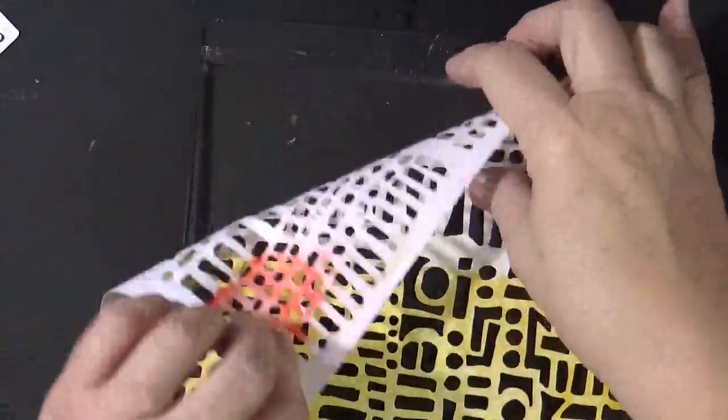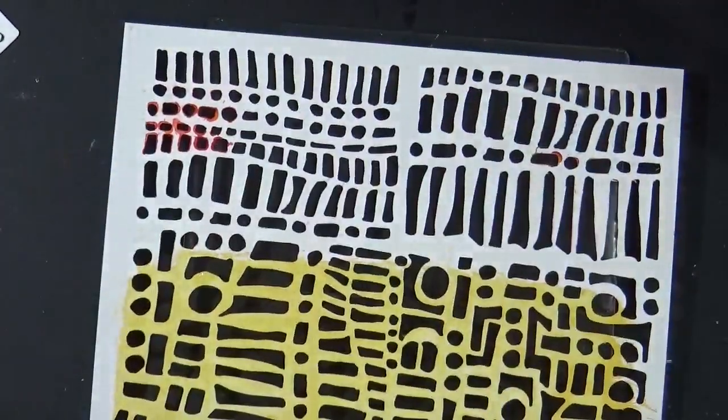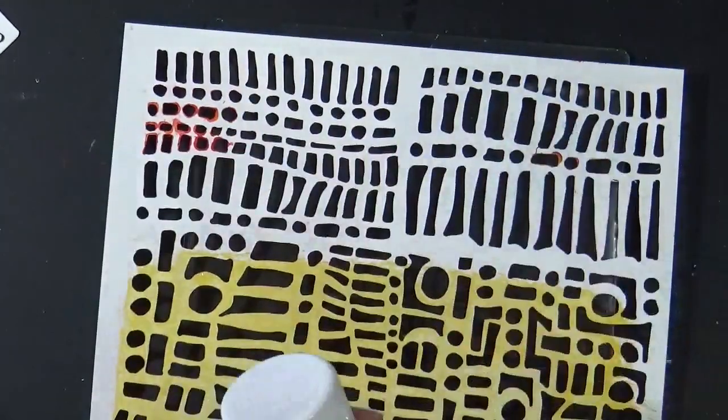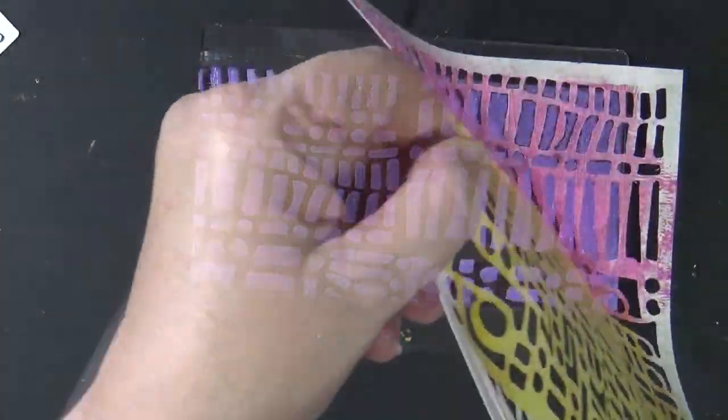This is that longer 3.5 by 6.5 Dina Wakeley. And let's just go with the same stencil, use a different section of it, and let's do some pink. Pull that off.